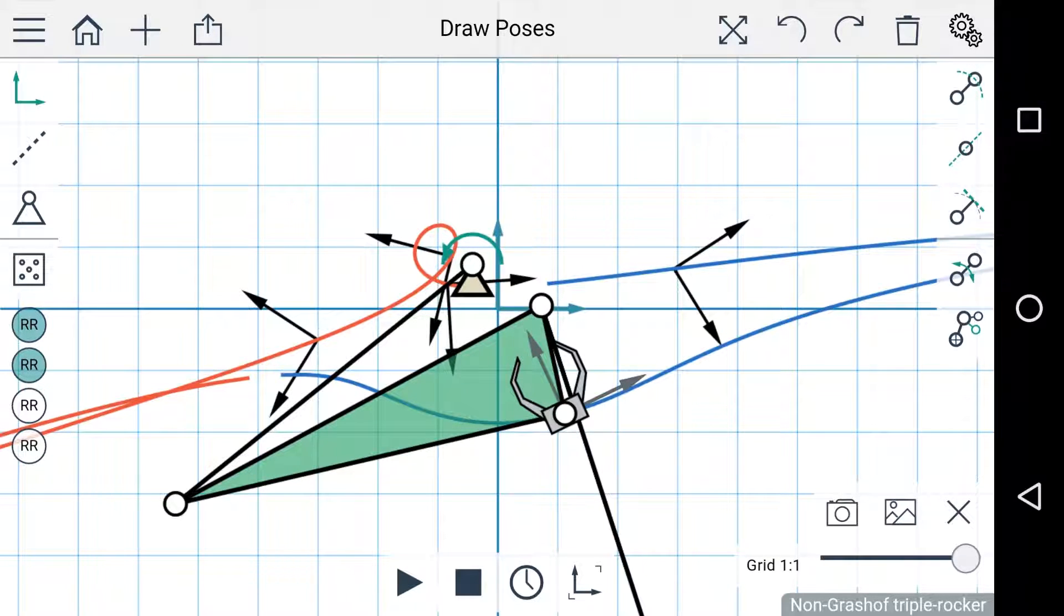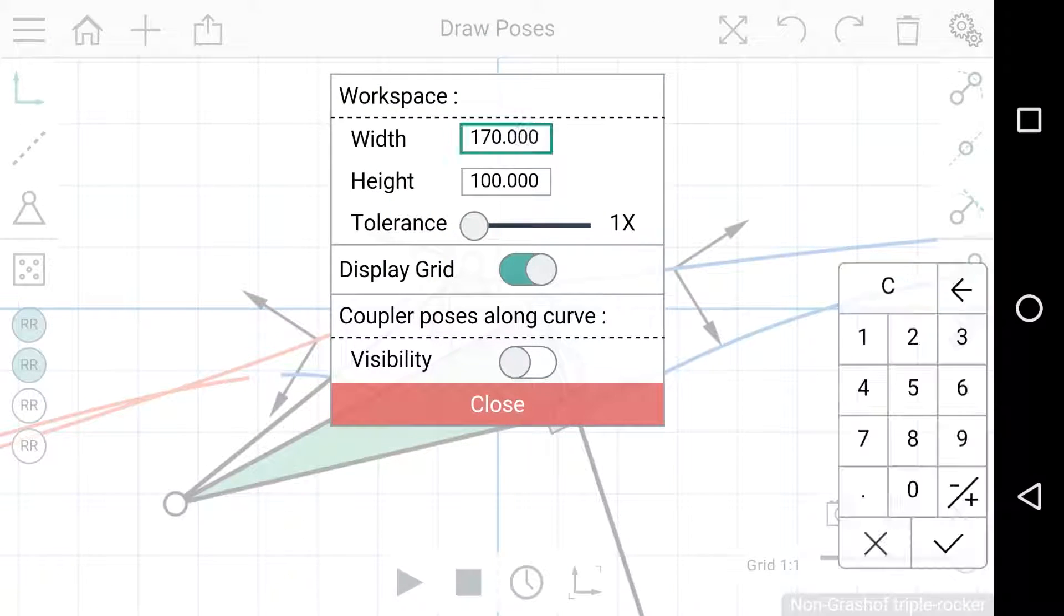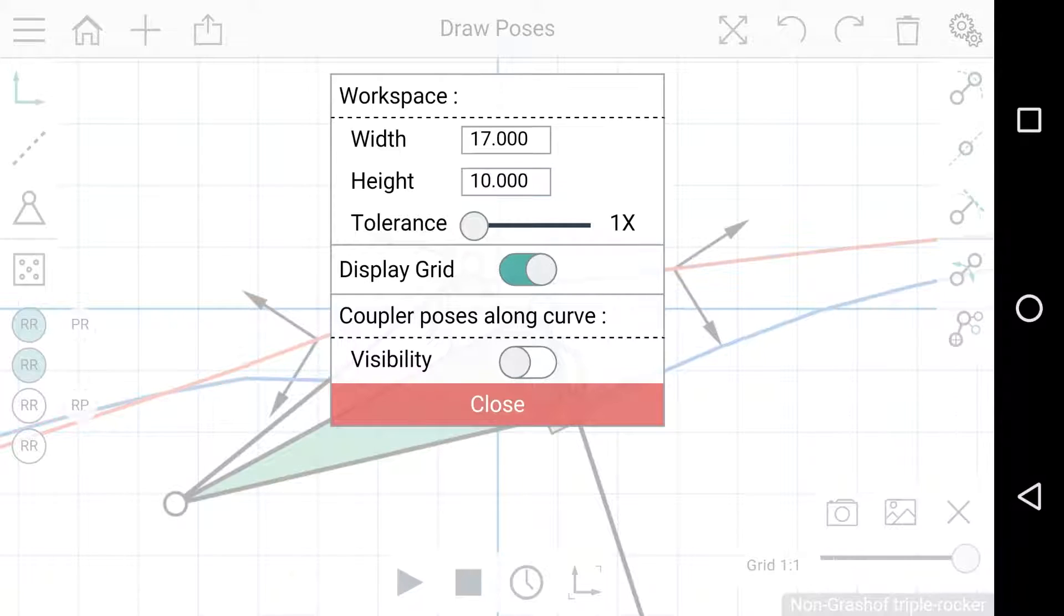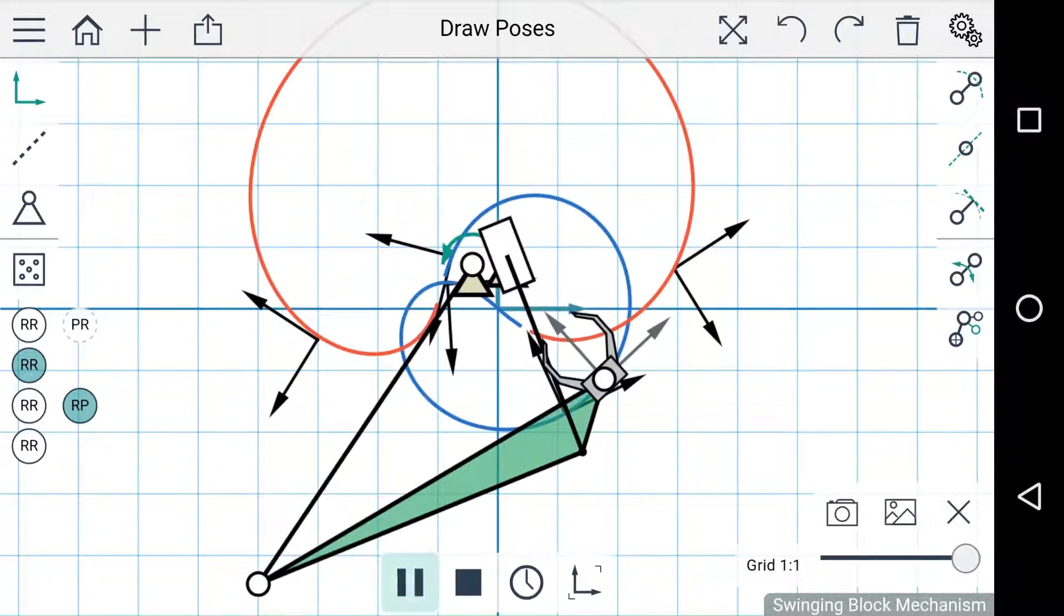The tolerance affects whether it's reinterpreted as an RP or a PR dyad. If the fixed pivot point of an RP dyad falls within the tolerance of the workspace it's reinterpreted as an RP dyad. Otherwise it's reinterpreted as a PR dyad. So changing the size and tolerance of the workspace will affect exactly how the dyads are interpreted.